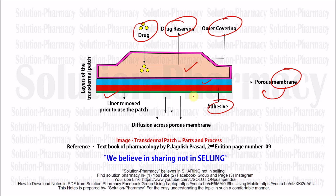Once applied, the drug will start diffusing. Diffusion is the process of movement of molecules from higher concentration towards lower concentration. In the drug reservoir the concentration of drug is higher compared to the skin where the patch is applied, so the drug releases from the reservoir towards the lower concentration at the affected skin — this is simply known as diffusion of drug.